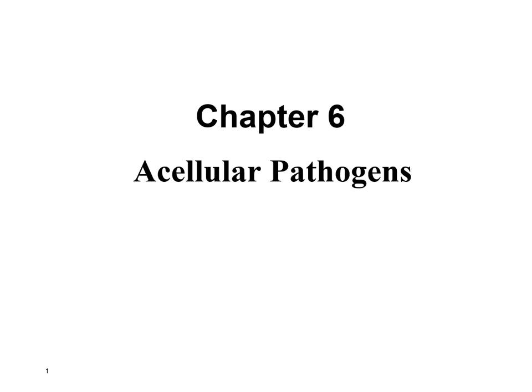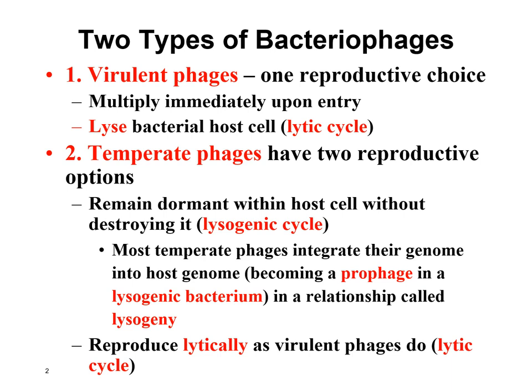We're going to review bacteriophages. There are two different types. We have the virulent bacteriophages — virulent means severe. They do the lytic cycle: they infect the bacterial cell, make new virus right away, then lyse the bacterial cell and kill it. So these virulent phages just do the lytic cycle.